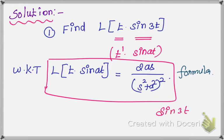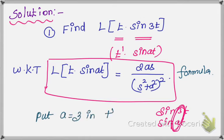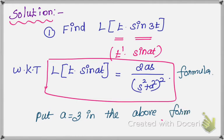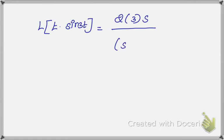Sin of 3t. We want sin at formula. So, a value place is what? 3. So just put a equal to 3 in the above formula. Next derivation: L{t·sin 3t} equals 2as. 2 into a value 3 into s value. We do not know. And s² plus a². A² is 3². The whole square.